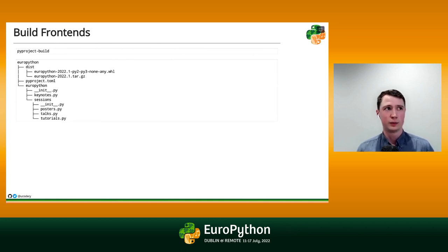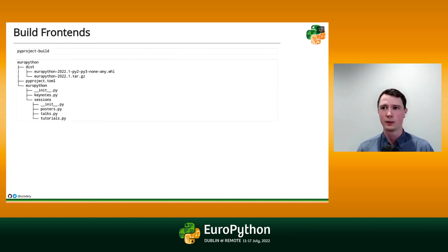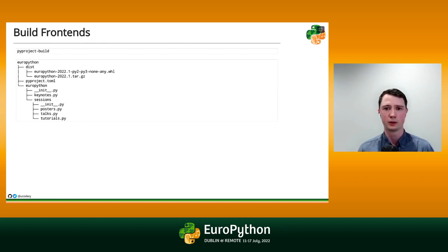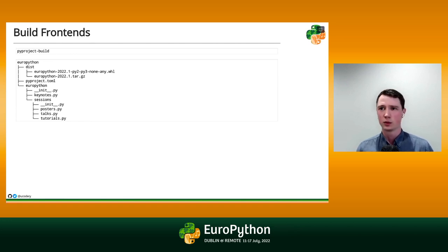We'll install build. Once it's in our local Python environment, it provides one command line to call: pyproject-build. We call it with no options or arguments and it goes ahead and does its thing and reports success. It builds our project.